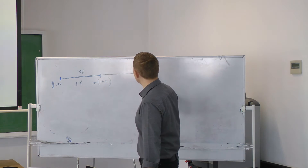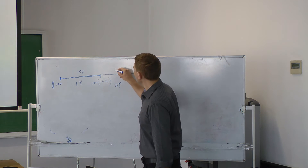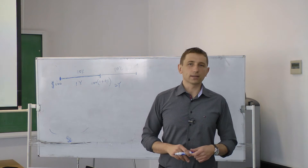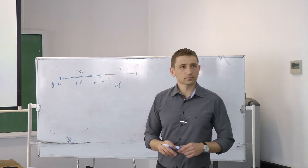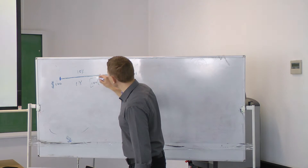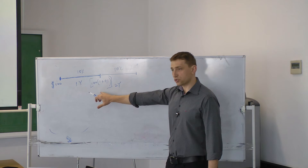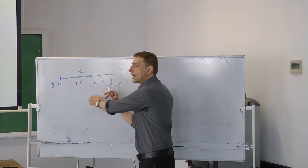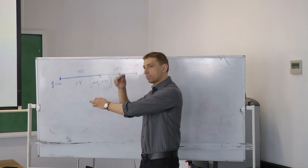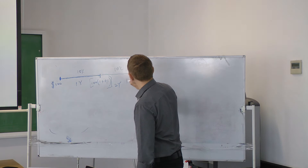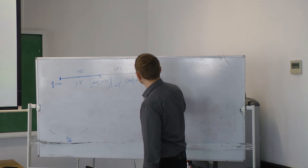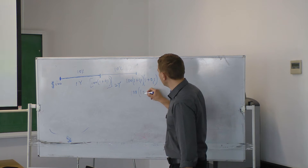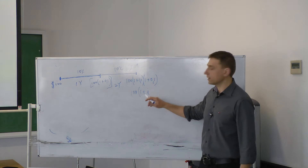What if I decide to leave my money for a second year? The interest rate stays the same — 10%. Now I have to take this amount and apply the interest rate to this amount, not 100, because now my deposit is worth 110. So I will calculate 110 plus 110 multiplied by 10%, which is 100 × (1 + 0.1) × (1 + 0.1) — that is 100 multiplied by (1 + i) to the power of 2.